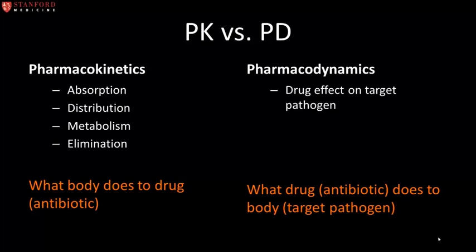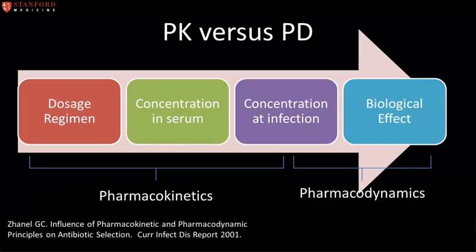Knowledge of these two characteristics is important for the selection of breakpoints for interpretation of in vitro susceptibility testing results, as well as optimal antibiotic selection together with the most effective dosing regimen. Pharmacokinetics describes the relationship between an antibiotic dosage regimen and concentration in serum and at the site of infection, but does not correlate the concentration at the site with the antibiotic's effect. Pharmacodynamics, on the other hand, describes the relationship between antibiotic concentration at the site of infection and its biologic effect on the organism, which could be bacterial killing or inhibition of growth.